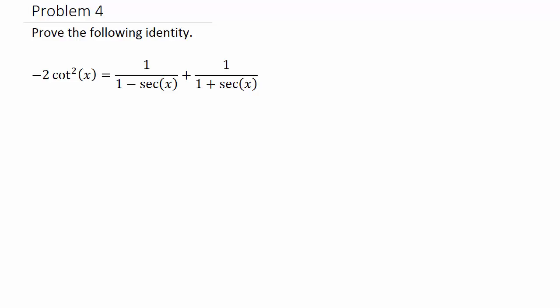So here we will obviously use the right hand side, so I'm going to use the one over one minus secant x plus one over one plus secant x. I think what we're going to need to do is get a common denominator and combine the two fractions.